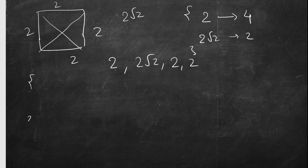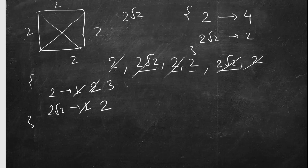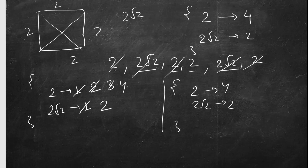For length 2 there will be four sides, and for length 2√2 there will be two diagonals — six line segments total. We insert them into the map in order: first, 2 is not present so we insert 2 with count 1. Next, 2√2 is not present so we insert with count 1. Then 2 again — already present, increment to 3. Then 2√2 — increment to 2. Then 2 again — increment to 4. Final map state: {2: 4, 2√2: 2}.